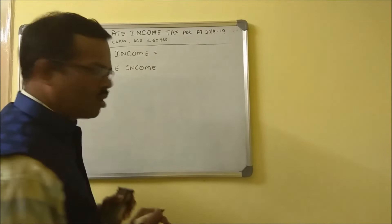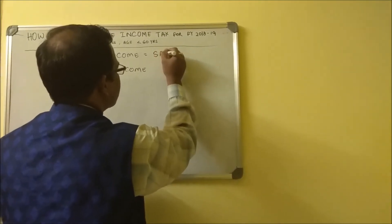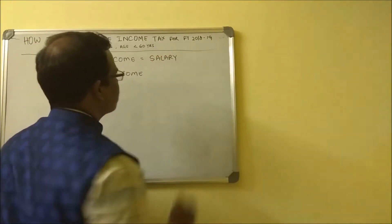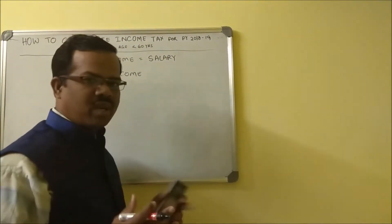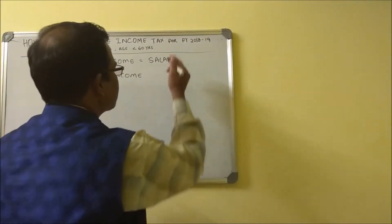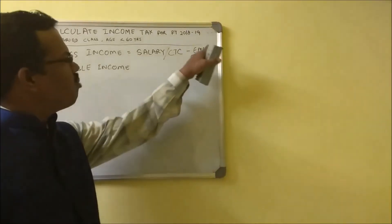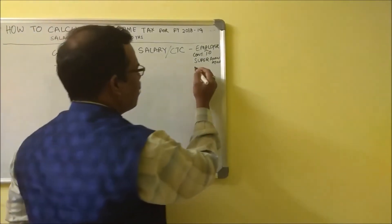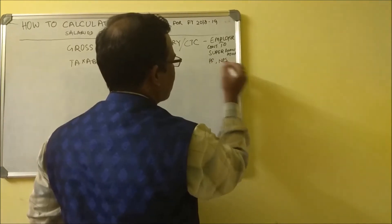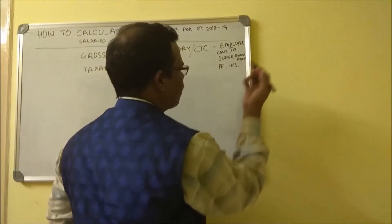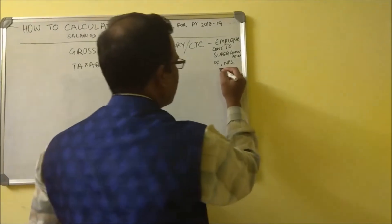This gross income will be your entire salary including perquisites - the package that your company offers to you - minus all your CTC components like employer contribution to superannuation funds, provident fund, national pension scheme, or gratuity if your package includes it. Those are all excluded from your package to arrive at the gross income.